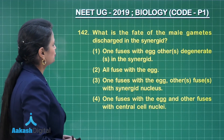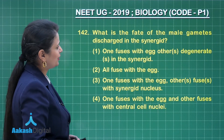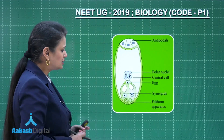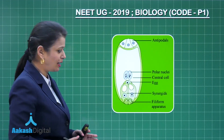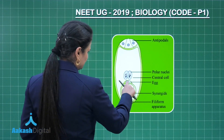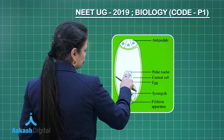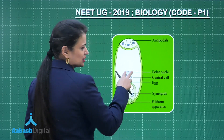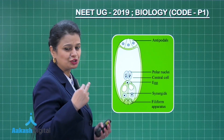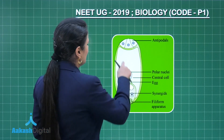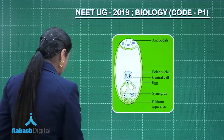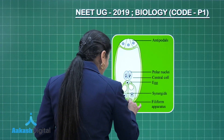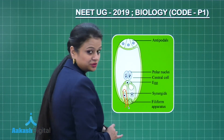Question number 142: what is the fate of the male gametes discharged in the synergid? In the embryo sac, these two are synergids, this is the egg cell, these are two polar nuclei which fuse just before fertilization to form the secondary nucleus, and these are three antipodal cells. The pollen tube enters the degenerating synergid.